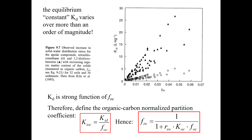Here's measurements of KD for two different chemicals: one is tetrachloromethane or carbon tetrachloride, and the other is 1,2-dichlorobenzene or orthodichlorobenzene. The dichlorobenzene has higher values of KD because dichlorobenzene is a bigger molecule, larger total size, and therefore lower solubility and higher KOW value, so it's going to have a higher KD. But you can see these range all over the map. There's a roughly linear correlation between KD and the fraction of organic carbon on the sediment.